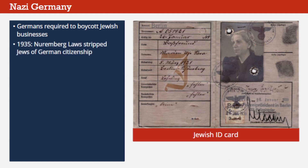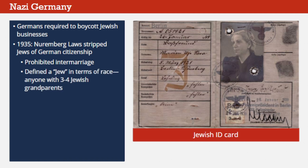In 1935, at the Nazis' annual party meeting in Nuremberg, new laws stripped Jews of their German citizenship and also prohibited intermarriage or sexual relations between Jews and ethnic Germans. The Nuremberg Laws defined a Jew in terms of race, not religion. Anyone who had three or four Jewish grandparents was considered Jewish, even if they did not actively practice Judaism, and even if they or their parents had converted to Christianity.